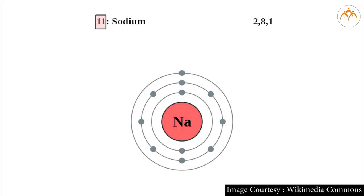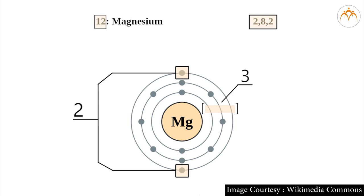For magnesium (Mg), atomic number is 12, electronic configuration is 2-8-2, number of orbits is 3, and number of electrons in the outermost shell is 2.